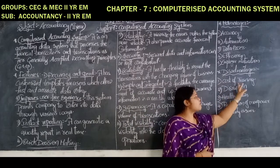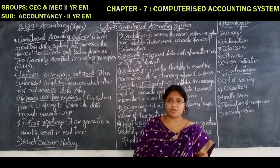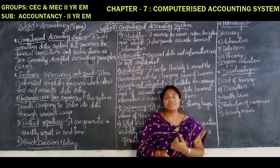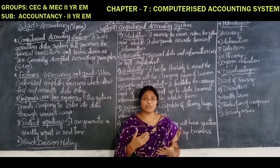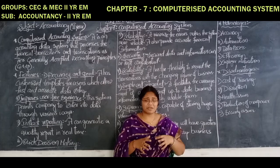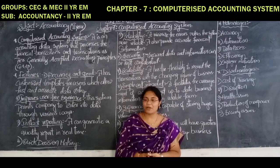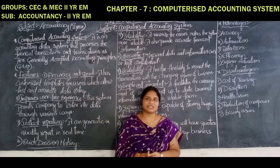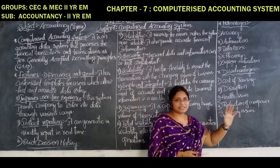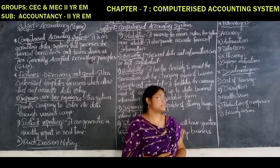Disadvantages: cost of training. When we are giving training to the employees, there will be chances of incurring a huge cost — a heavy amount is required. There will be some type of burden to the employee and also for the organization. How many advantages there are, in the same way there are disadvantages with the computerized accounting system. Disruption: if there is even a small disruption in the accounts, then the total system will be disrupted, so they should be very careful while doing the accounts.